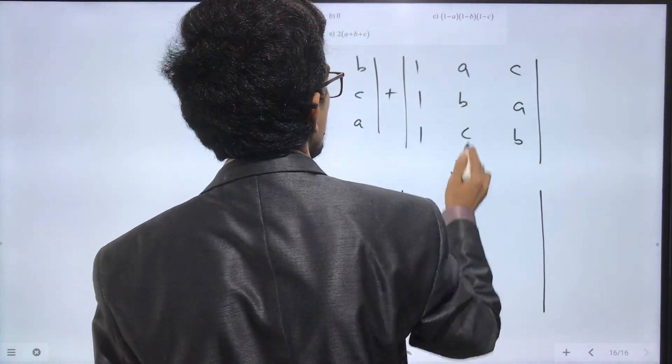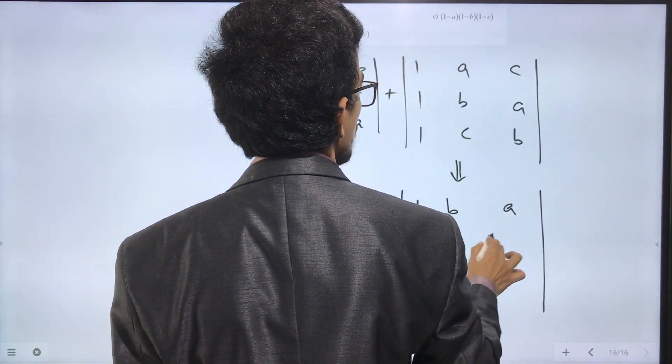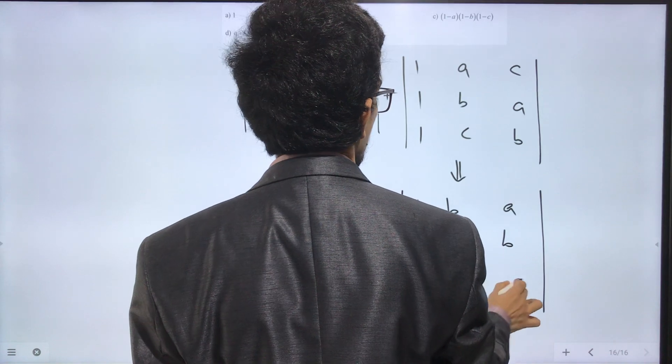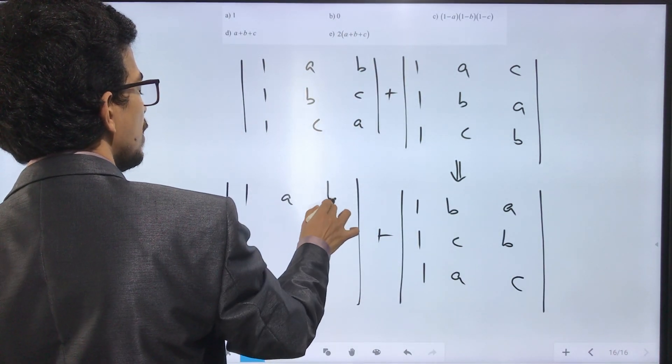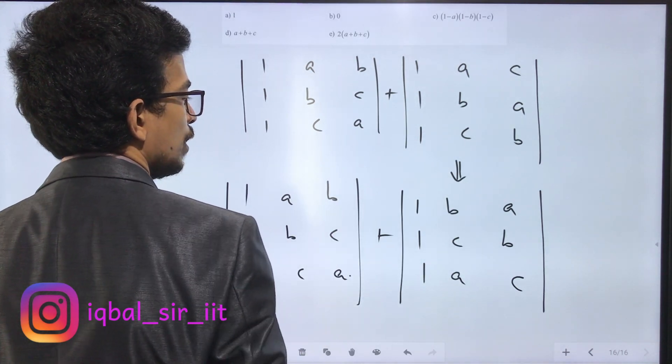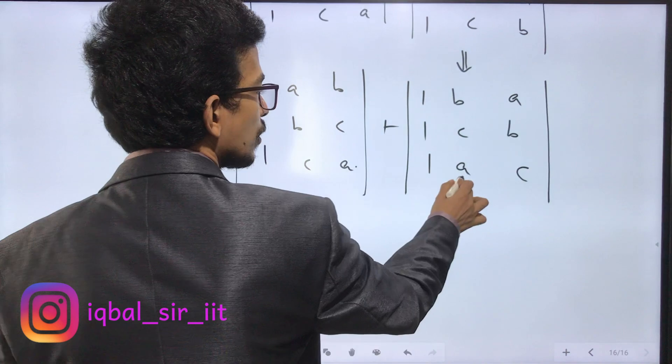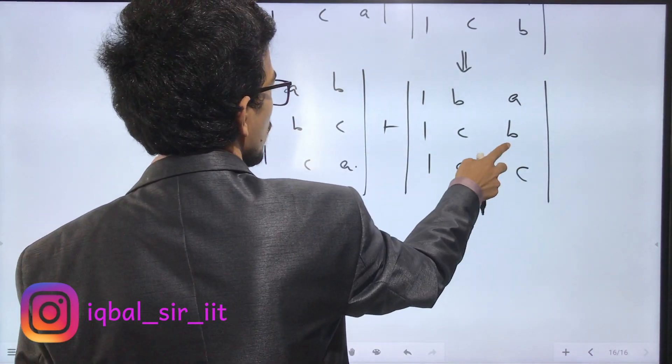Here we get determinant [1,a,b; 1,c,a; 1,b,c] plus determinant [1,a,b; 1,b,c; 1,c,a]. In the same way, these two are negatives of each other because the second and third columns are swapped.